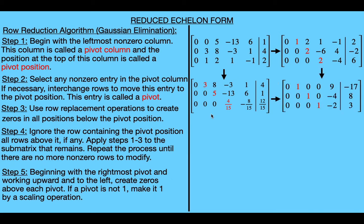So even though the echelon matrices produced after the fourth step are not unique, the reduced echelon matrix obtained after the fifth step is unique. In fact, for any non-zero matrix, there will always be more than one echelon matrix that is row equivalent to it, but there will be exactly one reduced echelon matrix that is row equivalent to it.